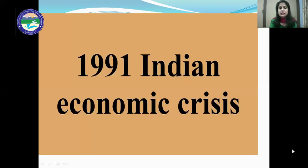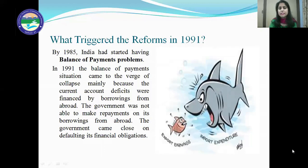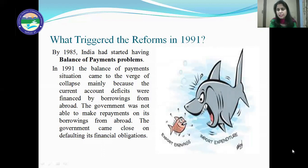Next is the 1991 Indian economic crisis. What triggered the reforms in 1991? By 1985, India had started having balance of payment problems. Balance of payment is the statement which shows the economic transaction of a country with the rest of the world. It has two sides: expenditure and earnings. When expenditures of a country are more than the income, then the balance of payment problem arises.